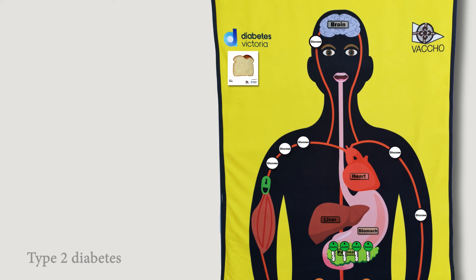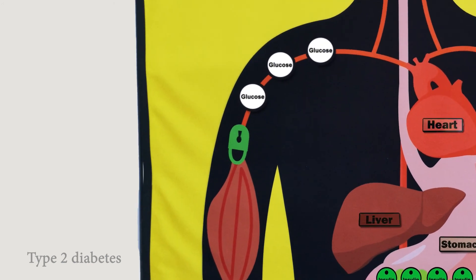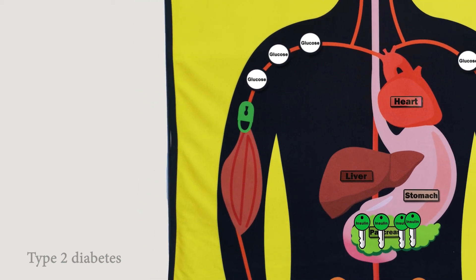In type 2 diabetes the muscle cell receptors are not working properly. It's like the locks are rusty. This is called insulin resistance. When insulin is released from the pancreas and travels to the muscles, the insulin cannot open the locks properly. This means that only some glucose can get into the muscle but not enough.